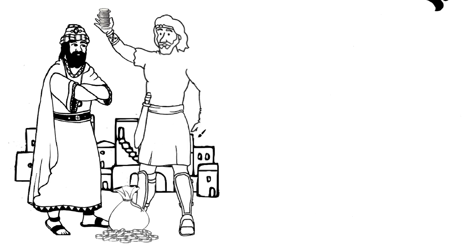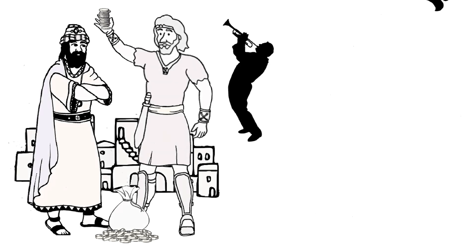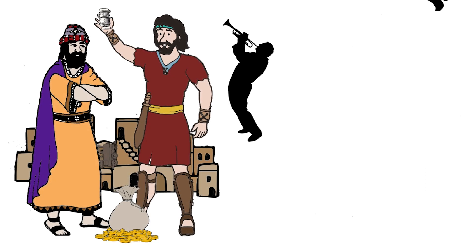Jesus told us to take heed that ye do not your alms, which are money or goods charitably or mercifully given to those in need, before men to be seen of them. Otherwise ye have no reward of your Father which is in heaven. He said that when we do our alms, we should not sound a trumpet before us or loudly boast of them, like the hypocrites in the synagogue and streets, who then have the reward of the glory of men.